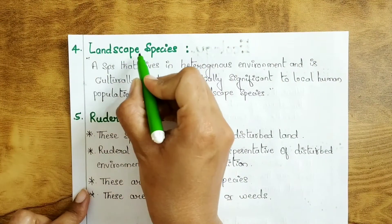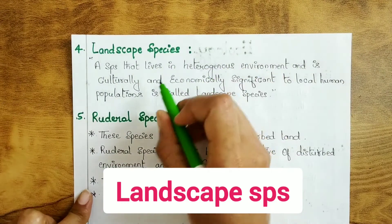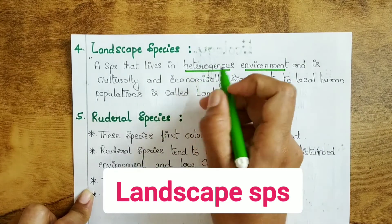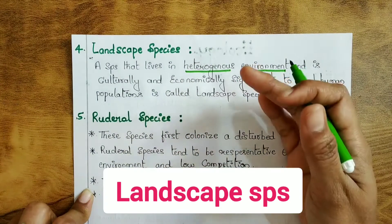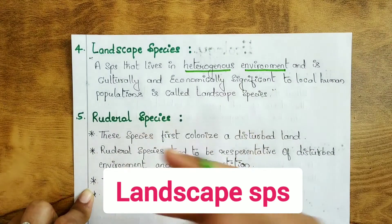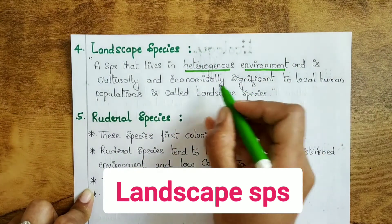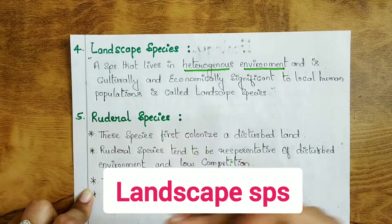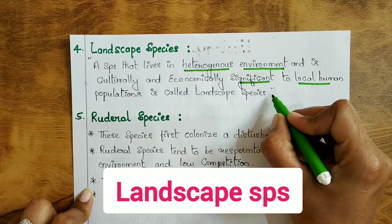The fourth term is landscape species. This is a simple one. A landscape species is a species that lives in a heterogeneous environment — heterogeneous meaning a mixture of different kinds of organisms and environments — and is culturally and economically significant to local human populations.